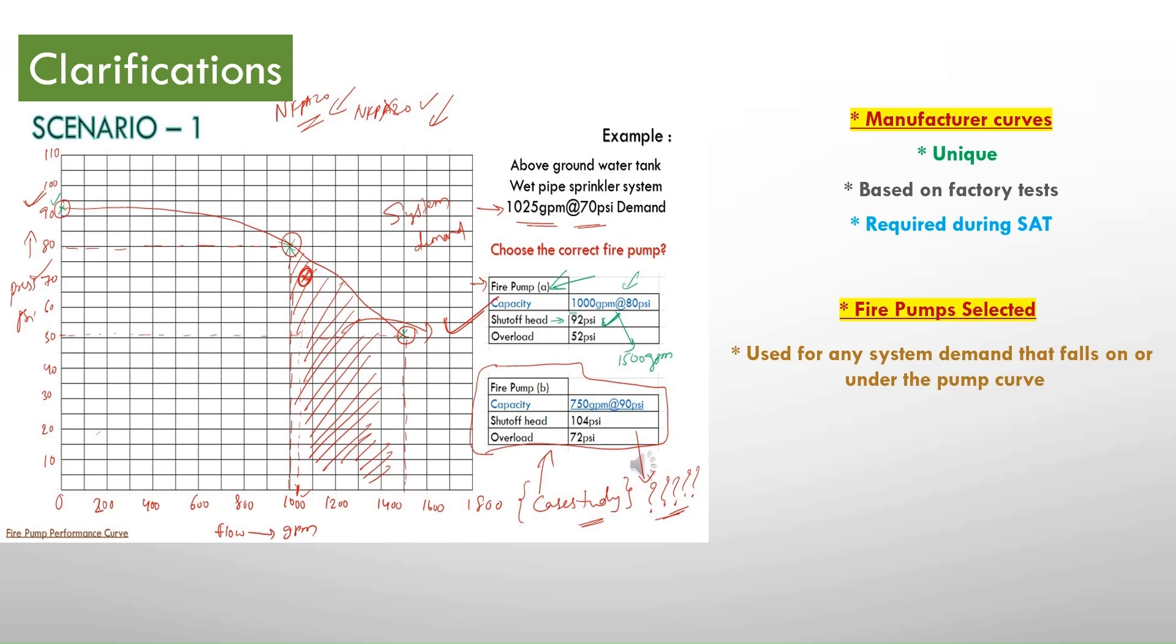It means if our system demand falls under this pump curve then we can use this particular pump. For example in scenario 1 we have 1025 GPM at 70 PSI which is under this curve so we are selecting this fire pump.